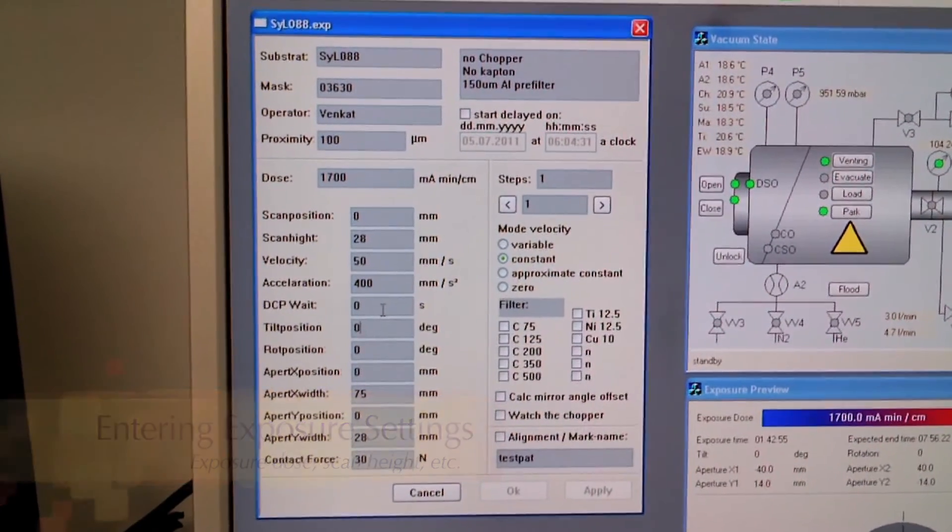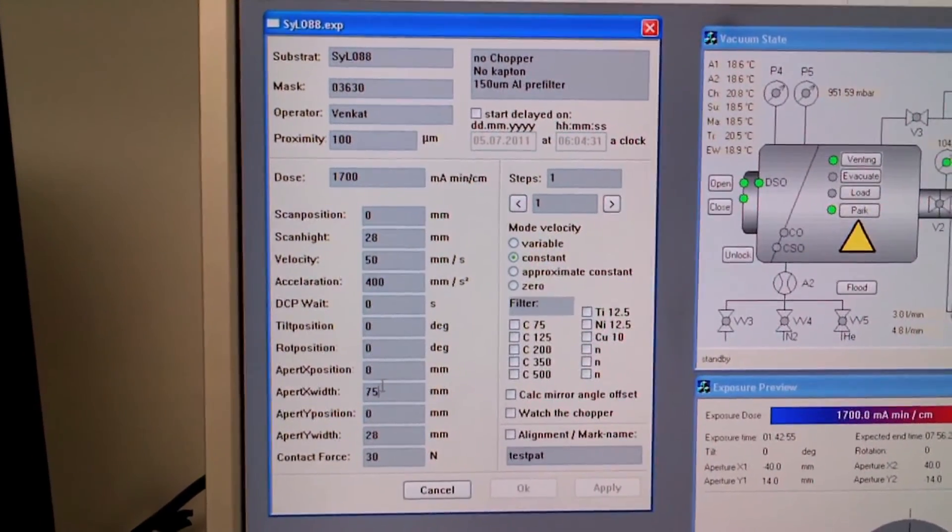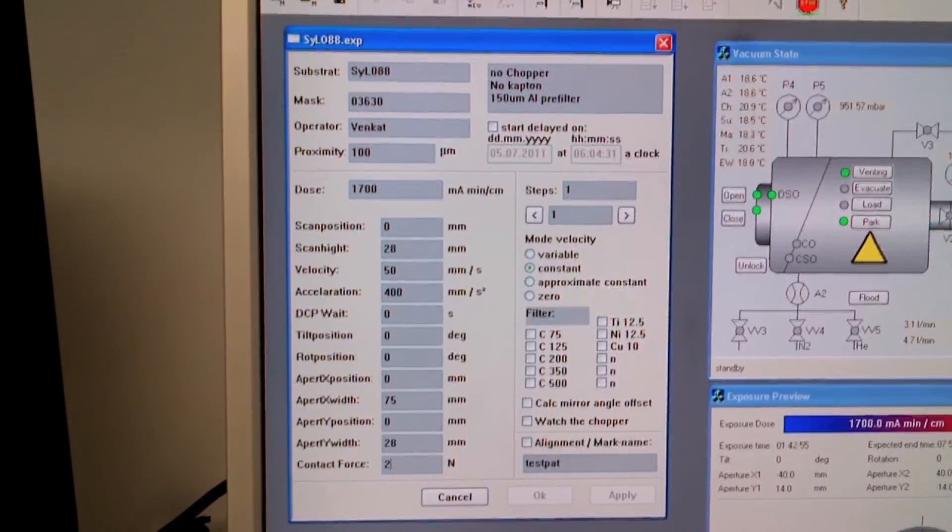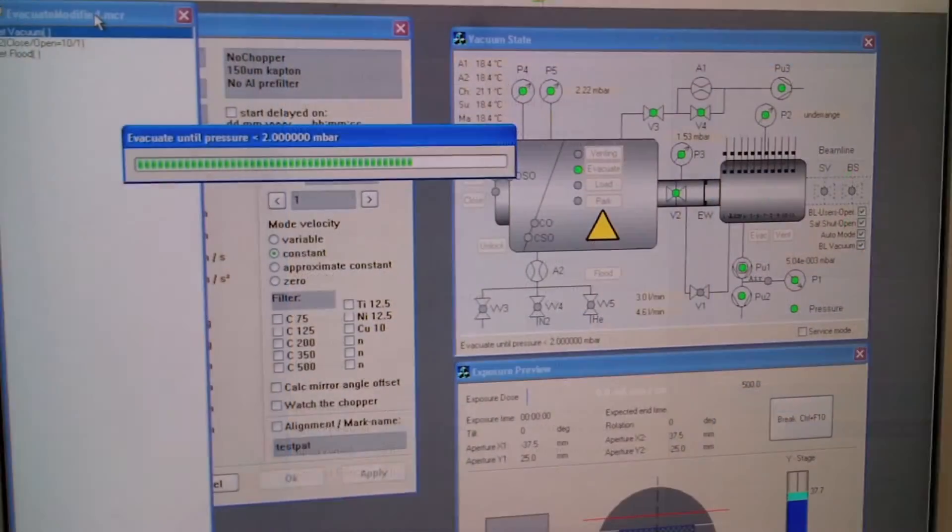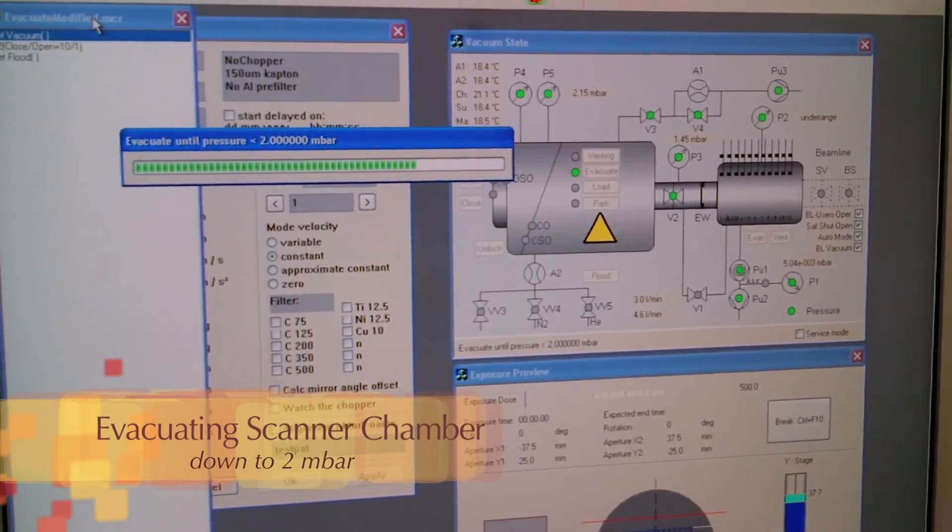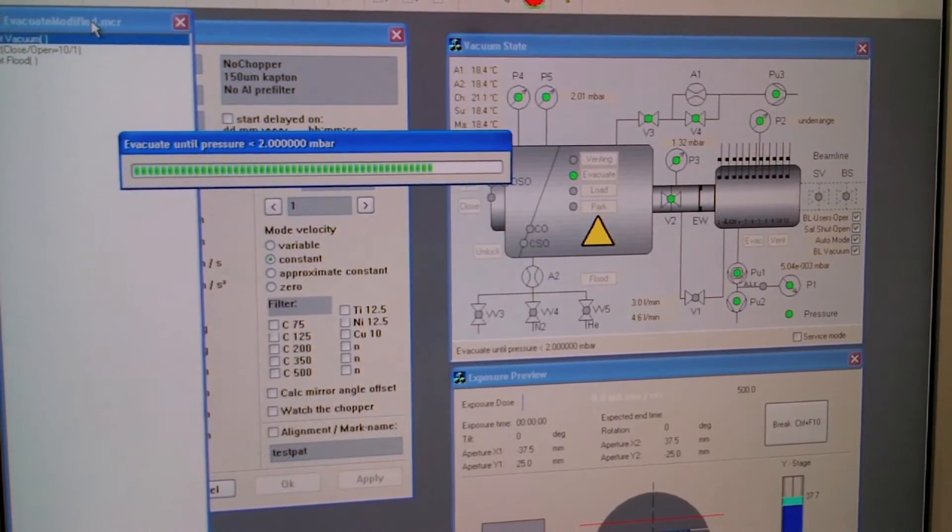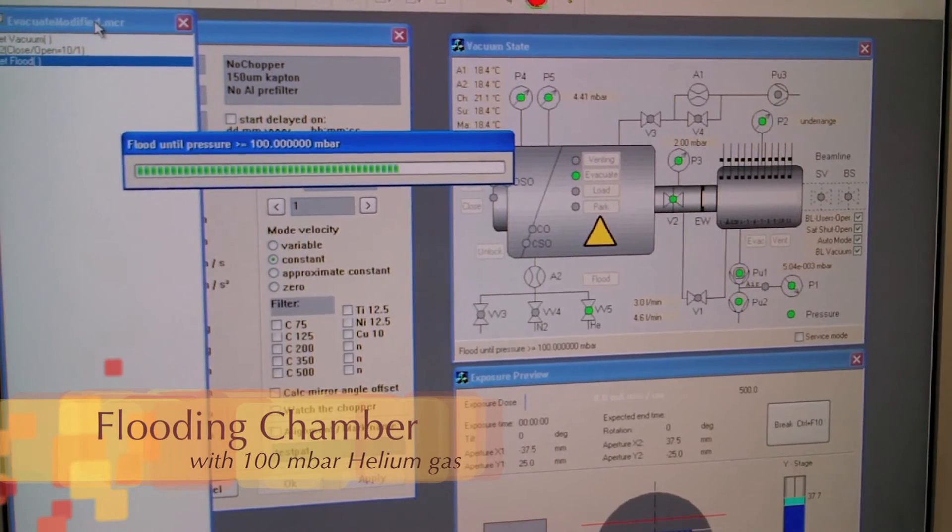In addition to exposure dose, this includes the scan height, scan speed, and the aperture settings to define the beam size, including the contact force to be applied to hold the mask and the sample together during the exposure scan. The exposure macro then goes through the initialization process and pumps down the scanner chamber to 2 millibar followed by flooding of the chamber with 100 millibar of helium.